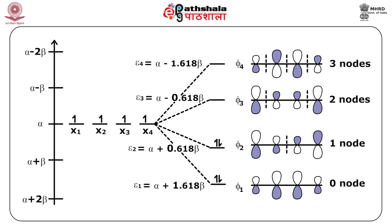The singlet–triplet transition is forbidden. The ¹AG → ¹BU transition is allowed and xy in-plane polarized because x and y together transform as BU. Of the other single excitations — ψ2→ψ4, ψ1→ψ3, and ψ1→ψ4 — only the last is allowed and also xy polarized. The others are ¹AG → ¹AG transitions, which are Laporte forbidden. Only the last excitation is allowed by the electric dipole selection rules.